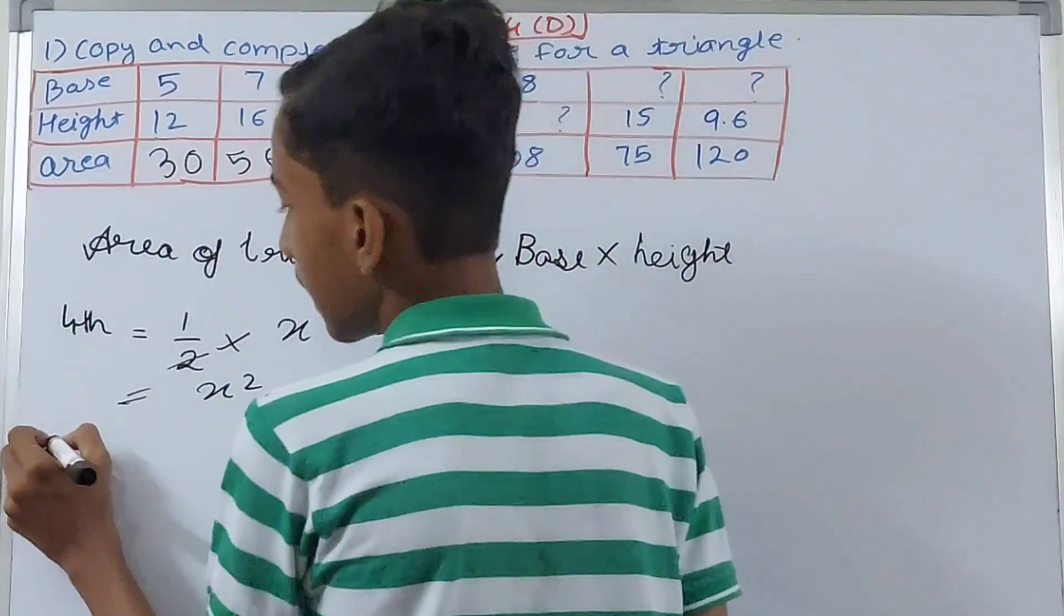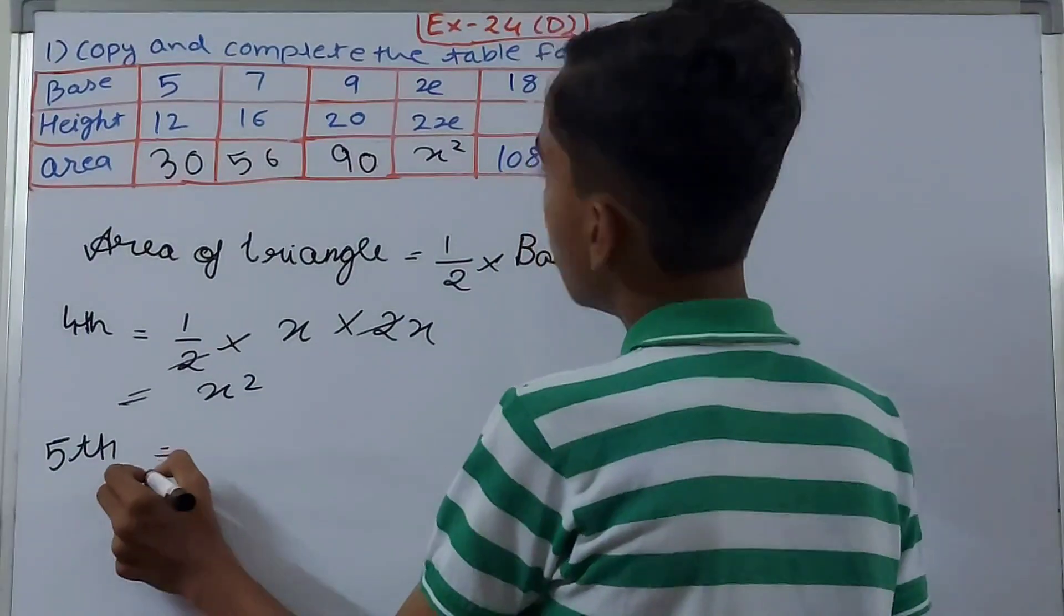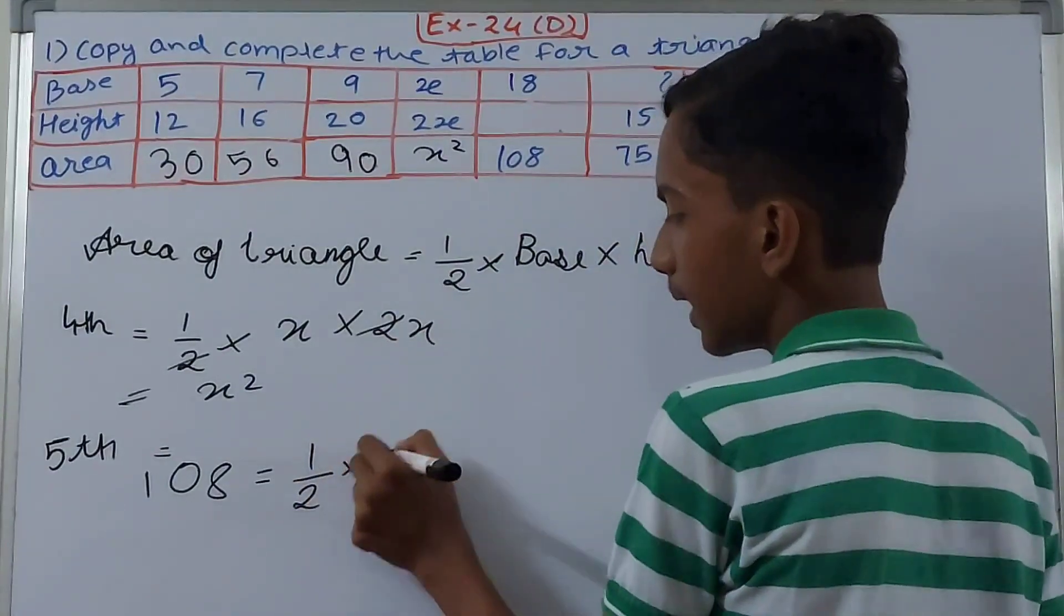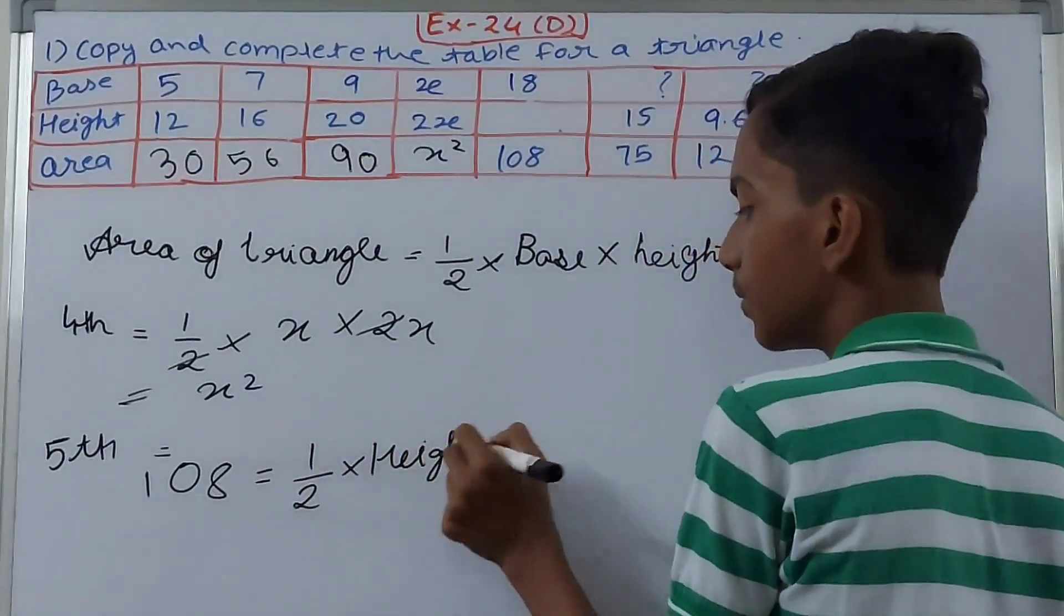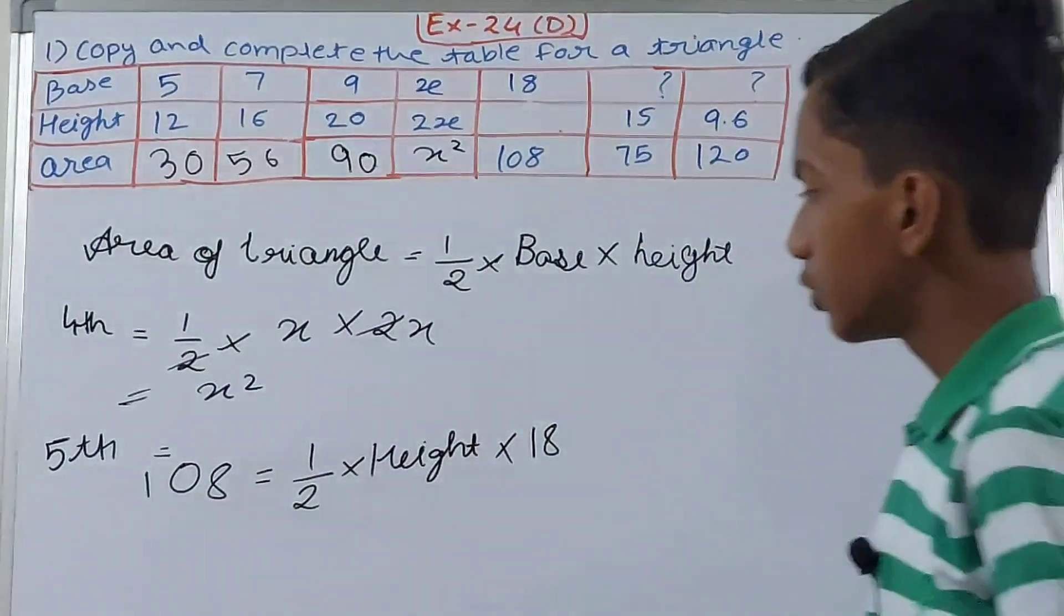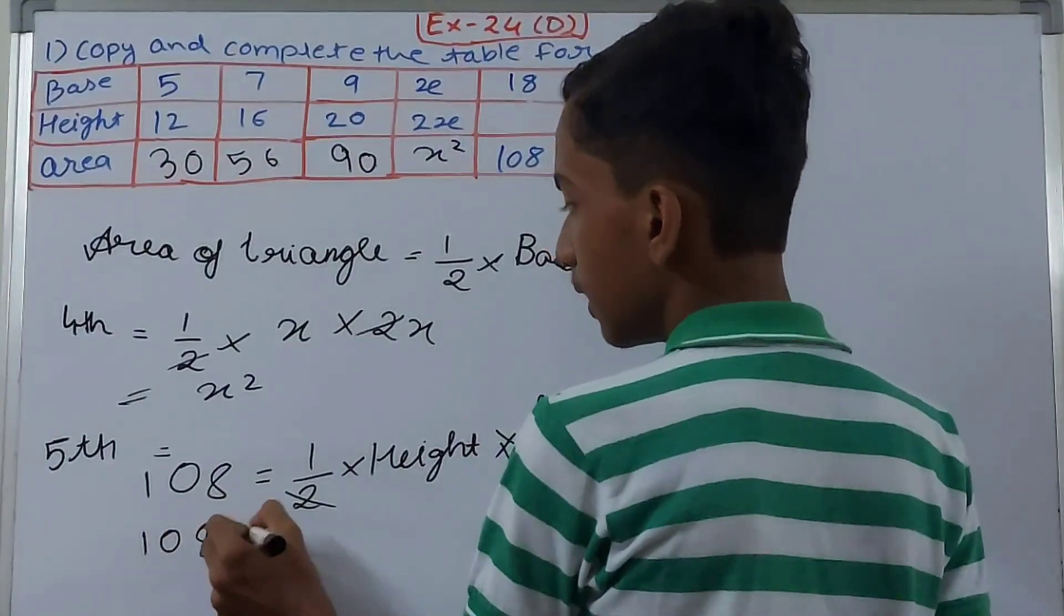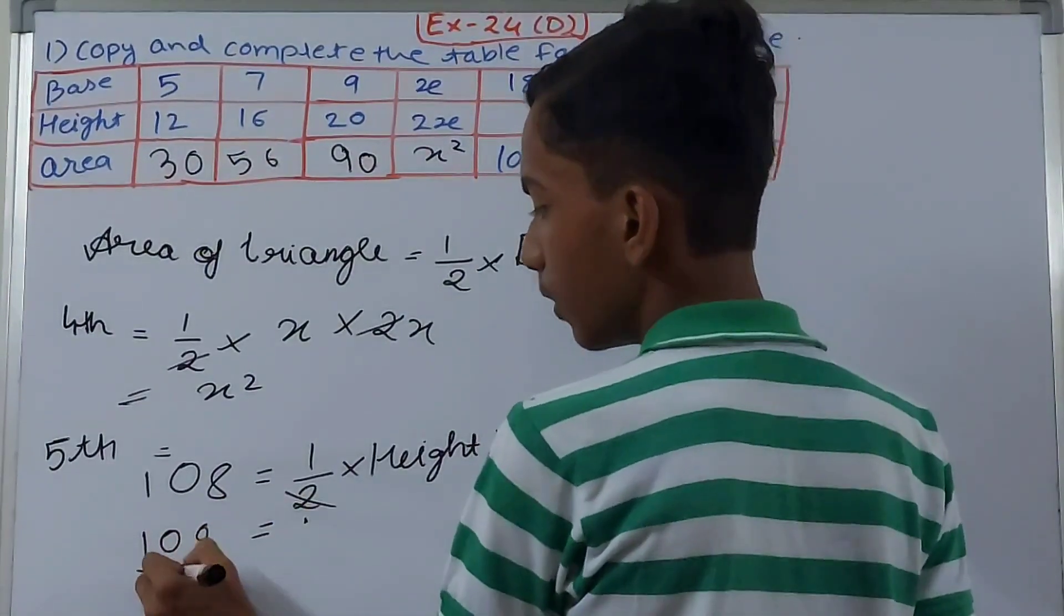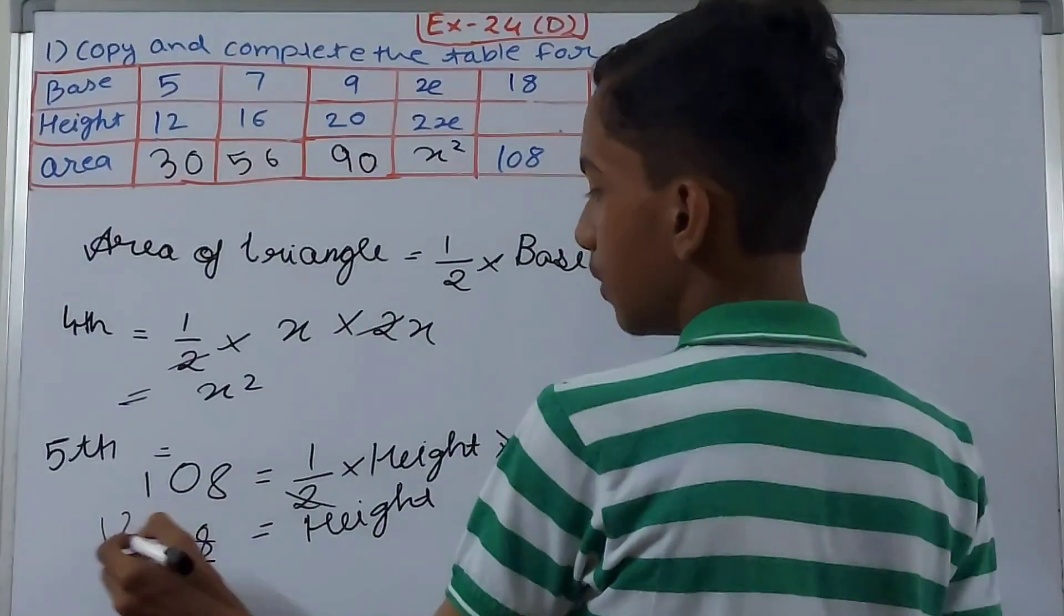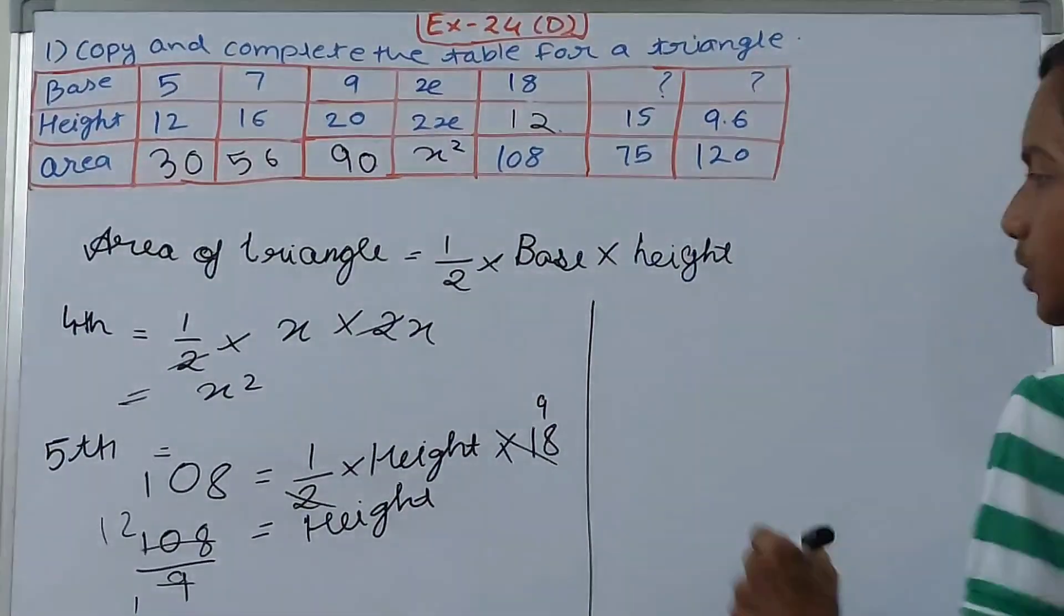Let's calculate the fifth one. Area is given and height we have to find. Area 108 equals 1/2 into height into 18 because 18 is the base. Cancel this, so 108 upon 9 equals the height, and that will be 12. So here we get 12.